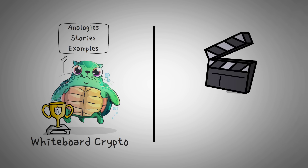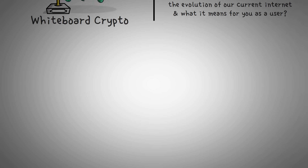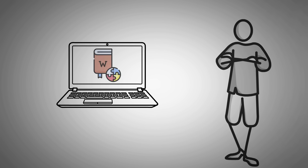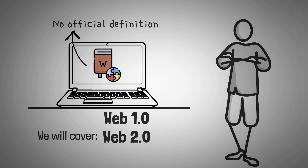In this video, we are going to explain what Web 3.0 is, how cryptocurrency ideas tie into the evolution of our current internet, and what it means for you as a user. Before we officially start, I just want to say that there's not some internet encyclopedia verified by the Institute of Global Technology that has a strict definition of what Web 3.0 is. So instead, I'm going to give you a rough definition of what Web 1.0 is, what a lot of people are saying Web 2.0 is, and then explain this new phenomenon that a lot of people are calling Web 3.0.